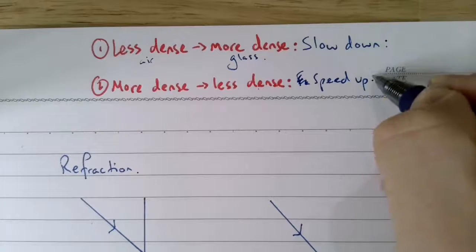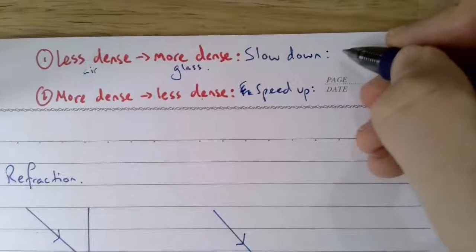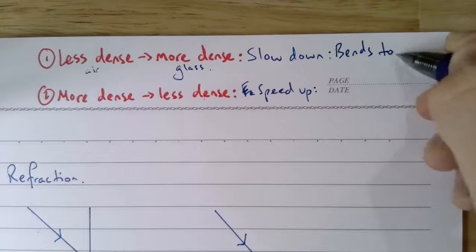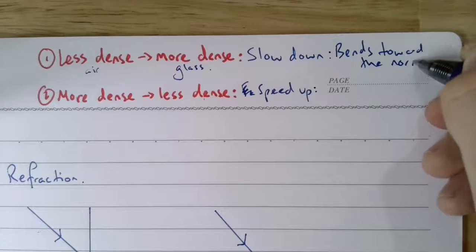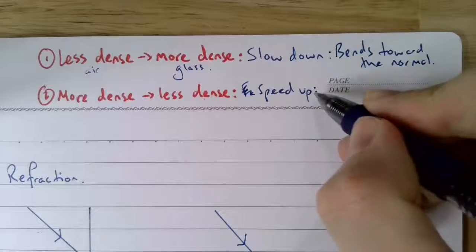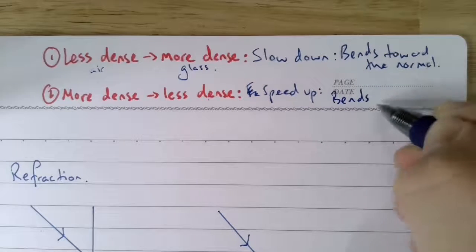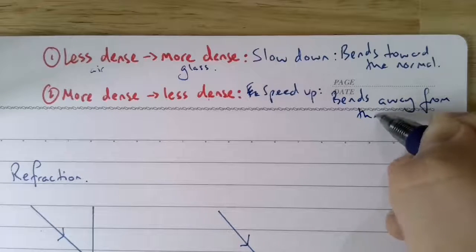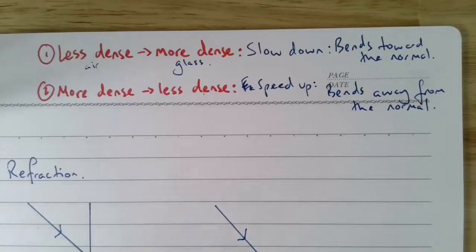If the light slows down, the effect is that it bends toward the normal. And if the light speeds up, it's the opposite — it bends away from the normal. So everything we do will rely on these two rules.